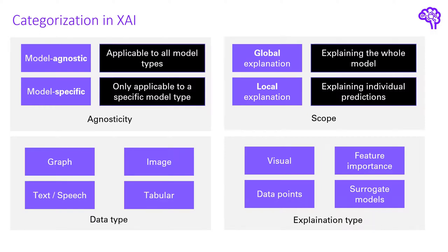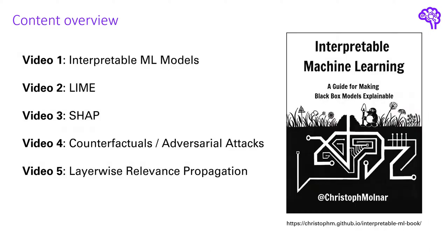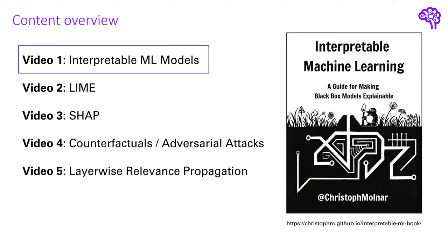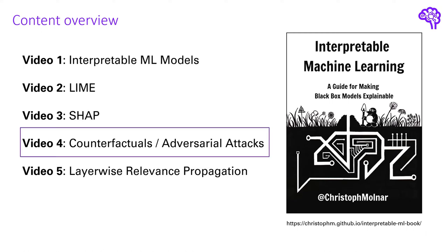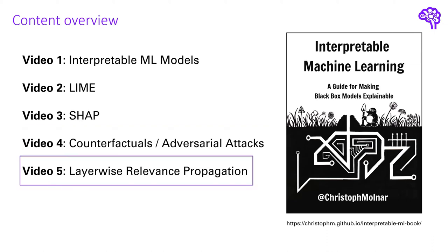So this is just to give you an overview on the variety of methods that have already been developed. For this series I decided to talk about four Explainable AI algorithms, and before that also about the possibility of working with by-design interpretable machine learning models. A lot of the content comes from the book Interpretable Machine Learning by Christoph Molnar — it's an extensive summary of methods and extremely well written, so if you're interested in further details please check it out. After talking about interpretable machine learning models in the first video, we will have a look at two of the most popular methods: LIME and SHAP. In video 4 we will have a closer look at counterfactual explanations and also quickly talk about adversarial attacks. The last video introduces layerwise relevance propagation, which is a method specifically designed for neural networks.